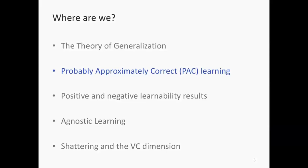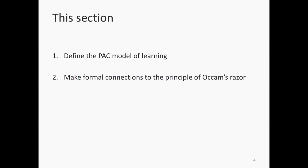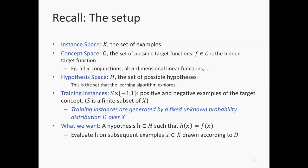We've already looked at why we need a theory of generalization and the key assumption that drives PAC learning, which is the fixed but unknown distribution from which all datasets are sampled IID. This section defines the PAC model for learning, and probably in the next lecture I'll make formal connections to the philosophical concept of Occam's razor. We'll be looking at a few theorems all called Occam's razor theorems. So let's look at what PAC learning is — there's a lot of notation that we've gone through and I decided to pack it all into one slide.